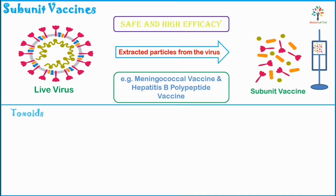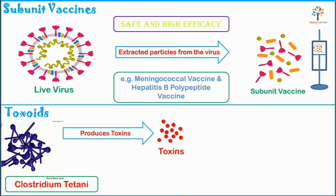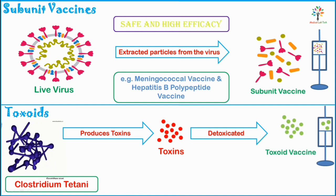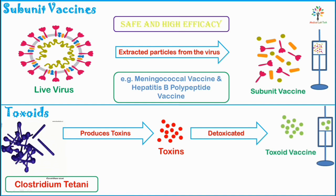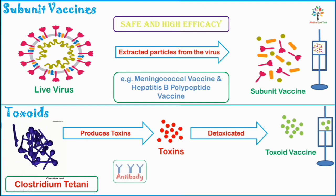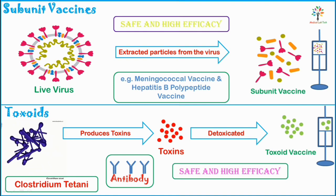Next, I am going to talk about toxoids. Certain organisms produce toxins — for example, diphtheria and tetanus bacilli. These toxins are detoxicated and vaccines can be produced from them, called toxoid vaccines. In the case of diphtheria and tetanus, the organism itself is not harmful, but the toxins released from them are harmful and cause the diseases. So if we can neutralize the toxins, we can prevent the disease. Antibodies produced by the immune system after vaccination will neutralize the toxins in case of a real infection. Toxoid vaccines are safe and have a high efficacy rate. An example is the tetanus toxoid (TT).